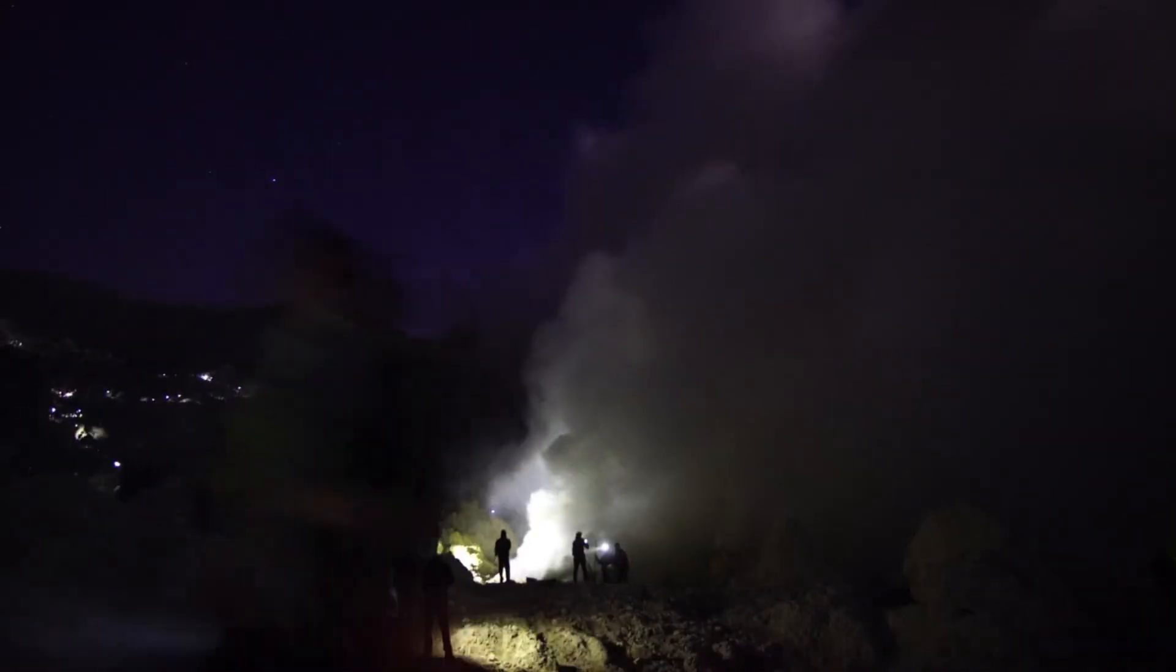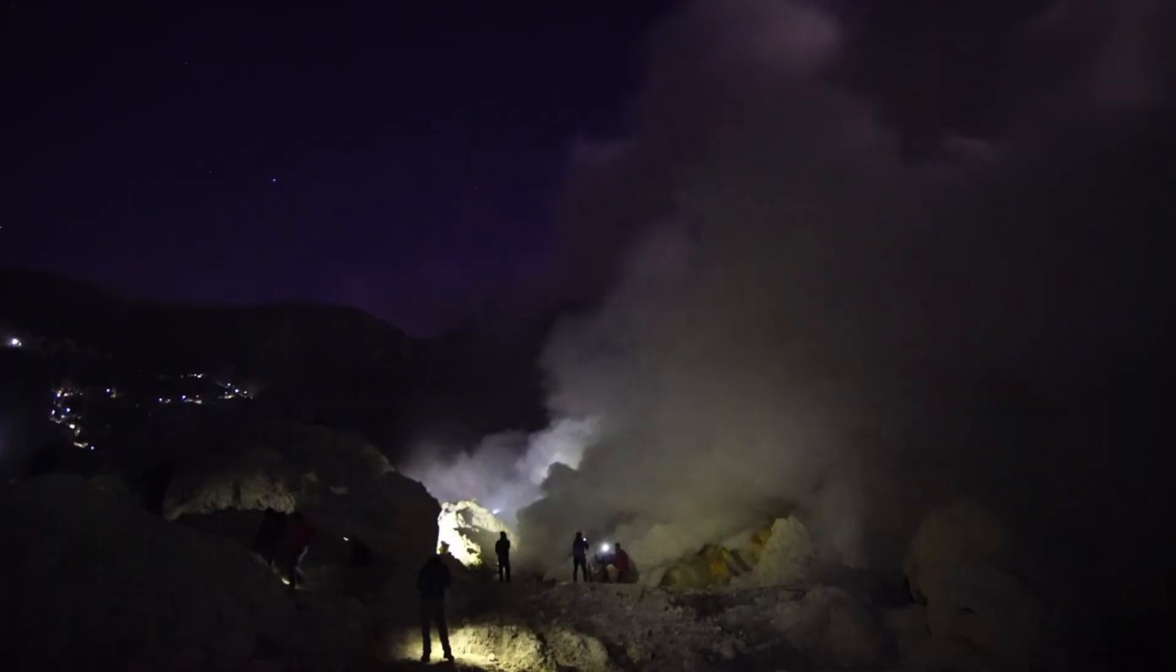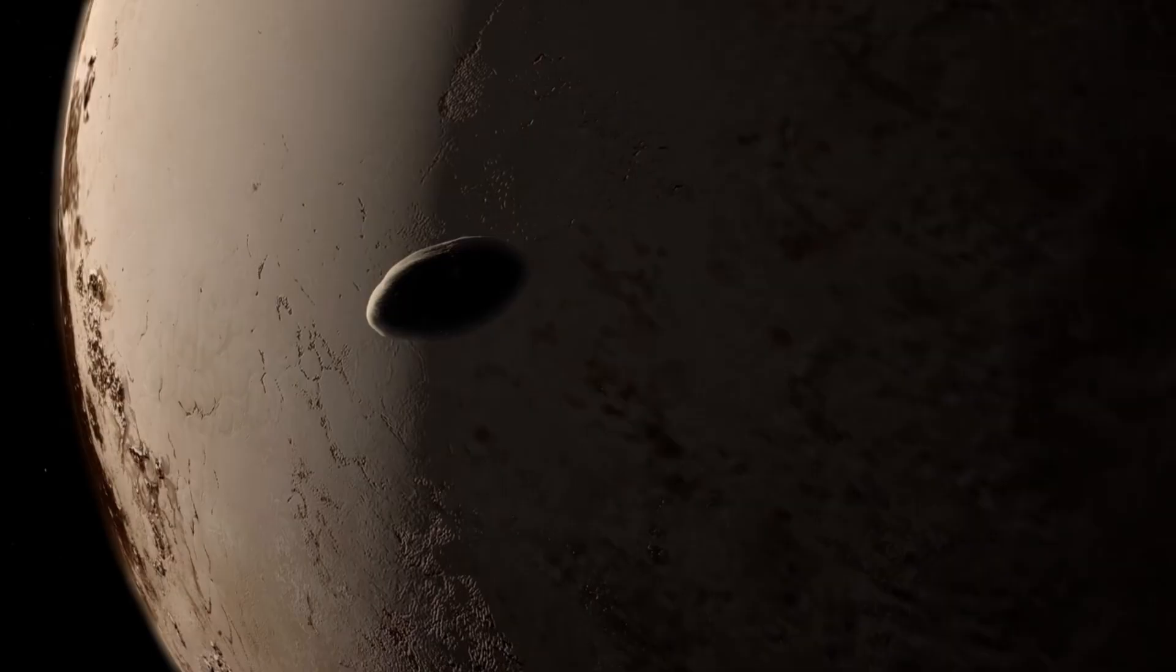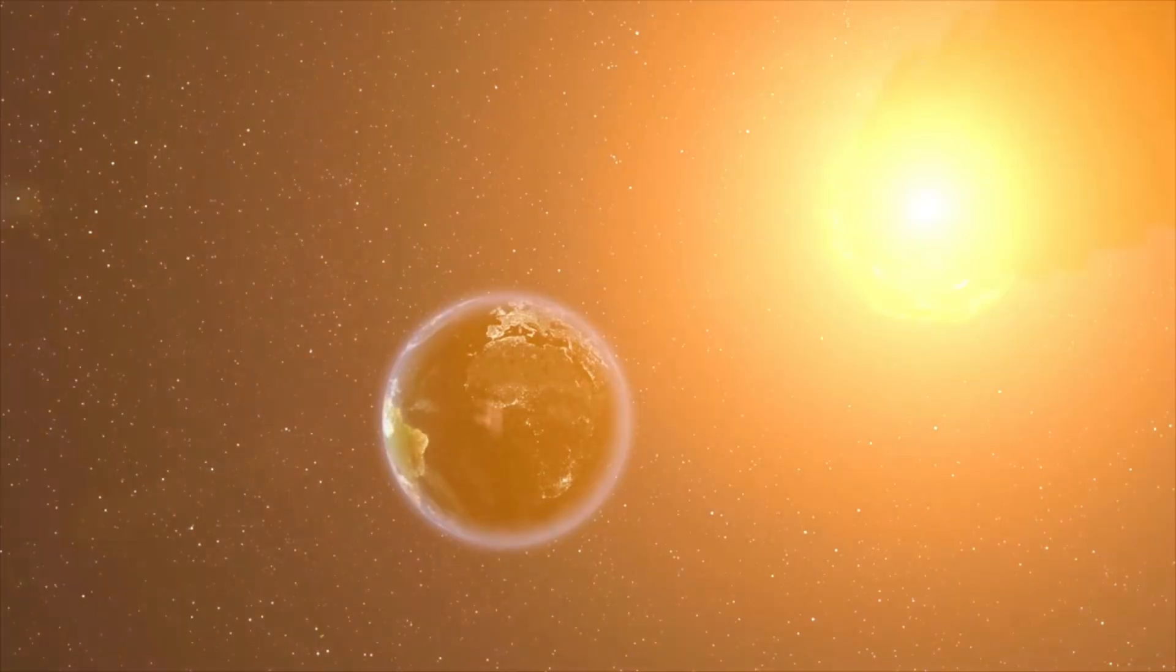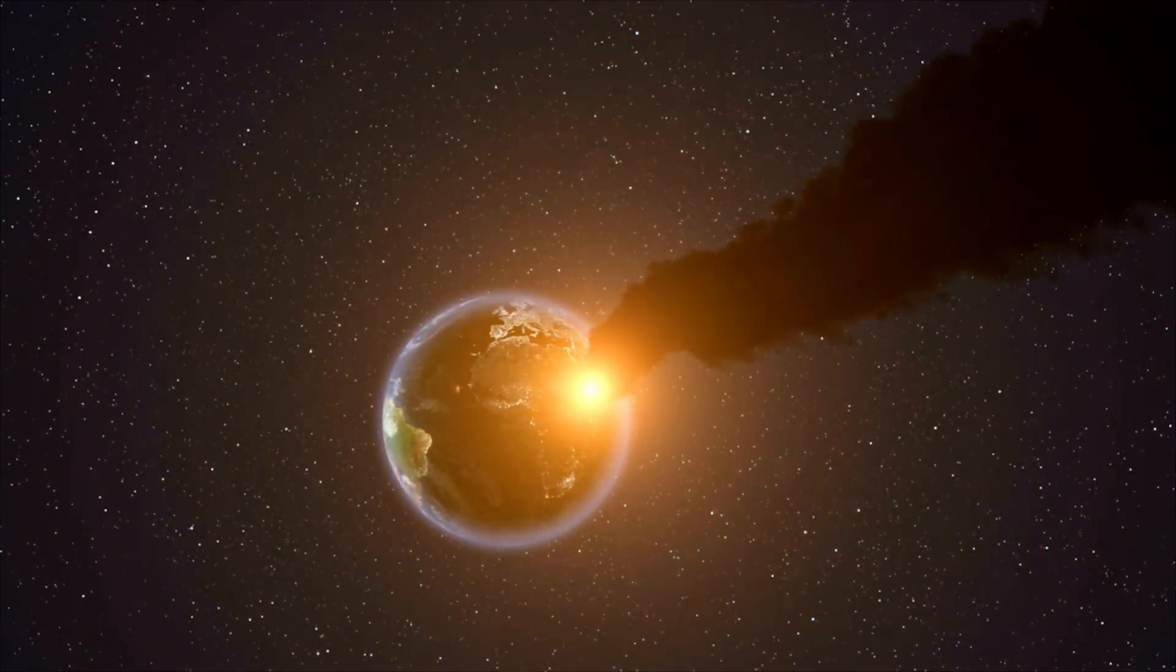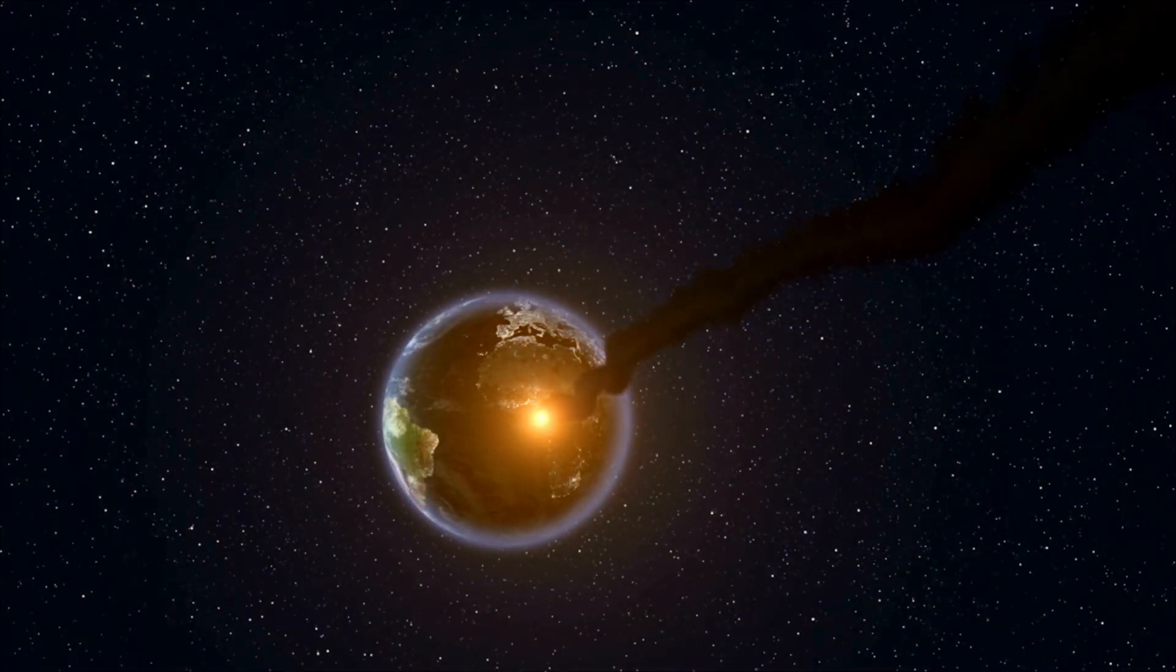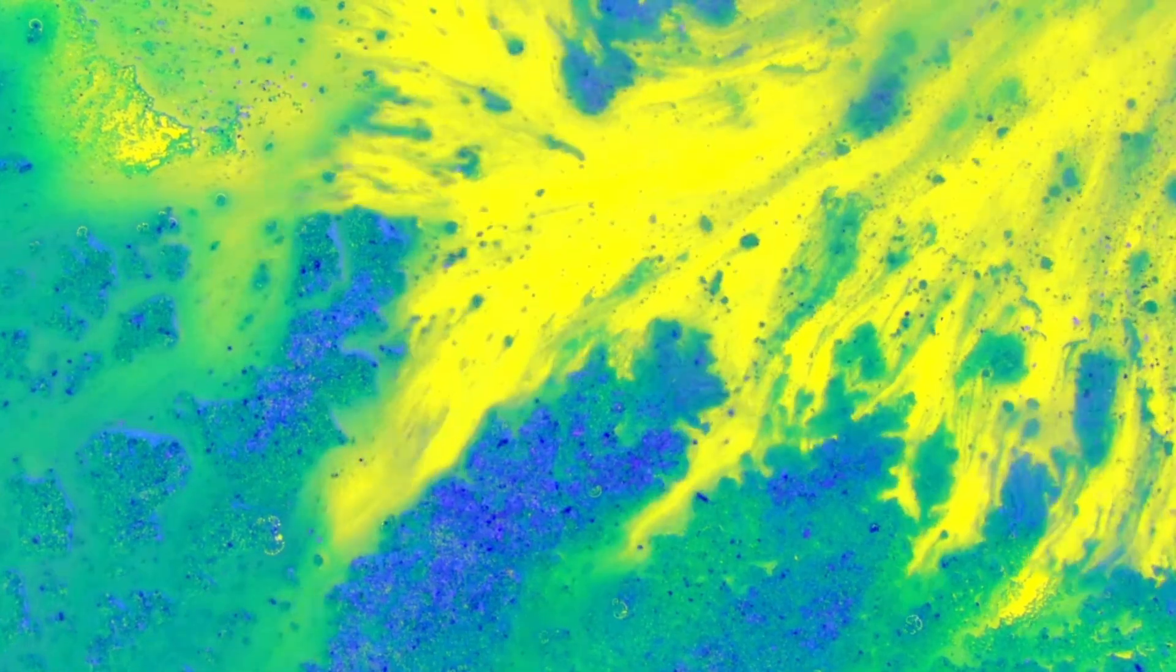Another tantalizing clue from Webb's data is the possibility, still debated, of an atmosphere. The heat on the planet doesn't seem to vanish instantly from the day side, suggesting there might be some thin layer of air redistributing that energy. An atmosphere would be critical, not just for stabilizing climate, but for shielding the surface from deadly radiation and perhaps even allowing water to exist.